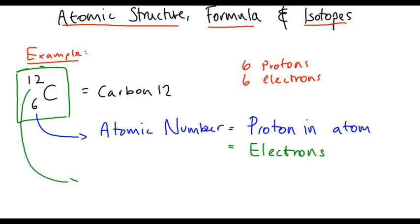This value is equal to the number of protons. This value here, the 12, is the mass number. And it's equal to all the masses added together in the atom, so this is the protons plus the neutrons.